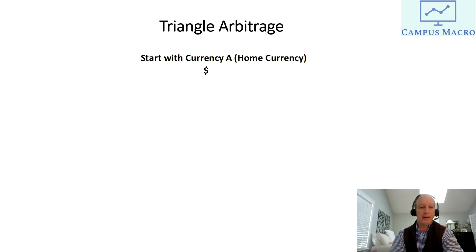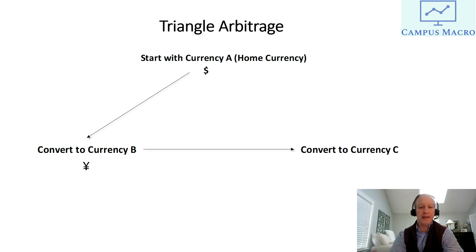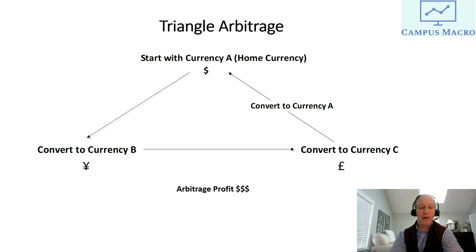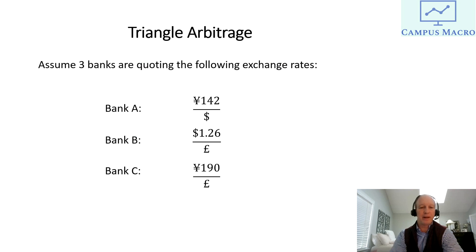To explain it a bit better: you start with one currency, say the dollar, and convert it into a second currency — let's say the yen. Then you go to Bank C and convert it into a third currency, let's say the pound. Finally, you make the triangle round trip — you convert it back into dollars and make an arbitrage profit. You only create this profit if the three currencies are misaligned.